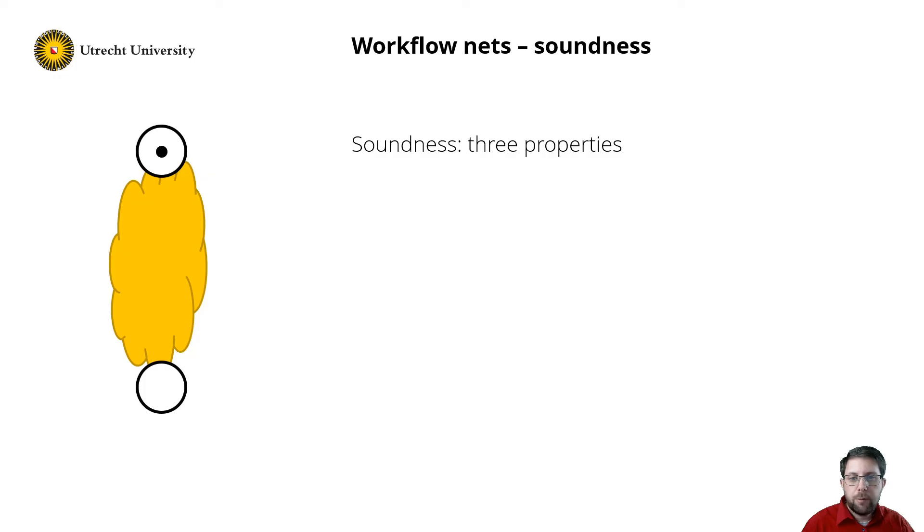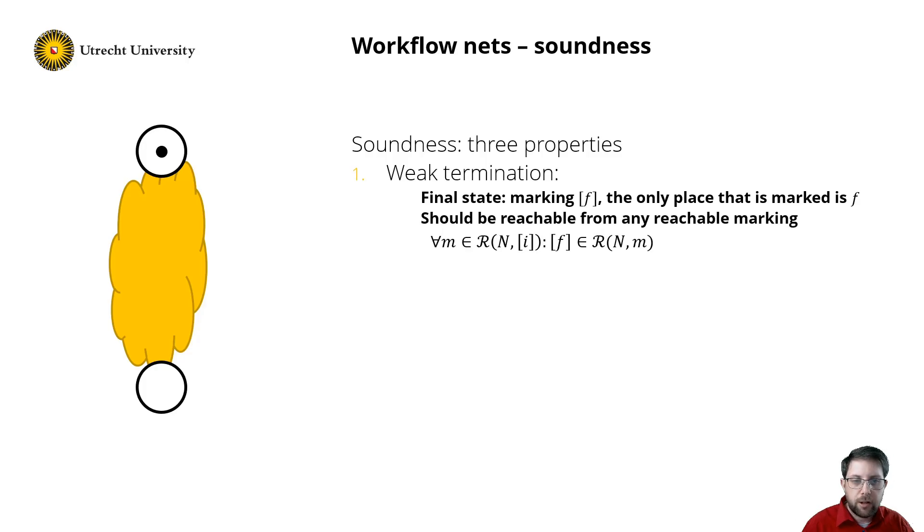An important property for workflow nets is soundness. Soundness consists of three sub-properties. First, we have weak termination. A process has a clear goal. In terms of Petri nets, this is the final place. So reaching the goal is represented in the Petri net with a single token in the final place. Now, weak termination expresses that wherever you are in executing the net, you should always be able to reach this final marking, formally captured in this formula.